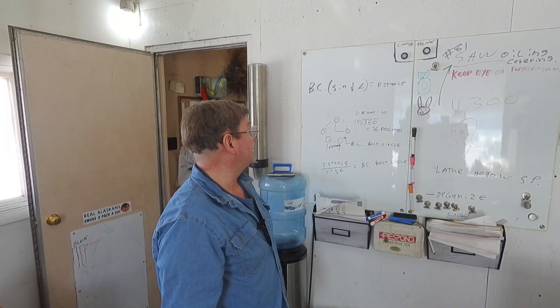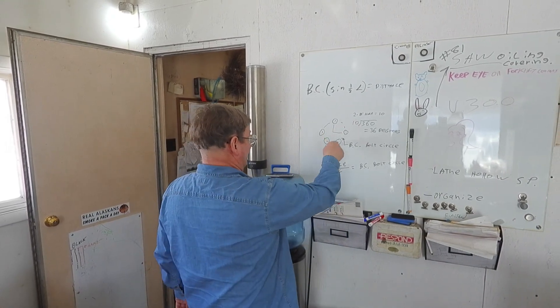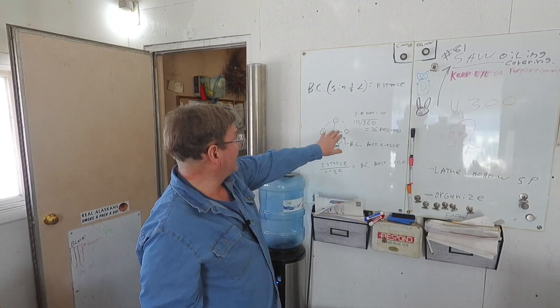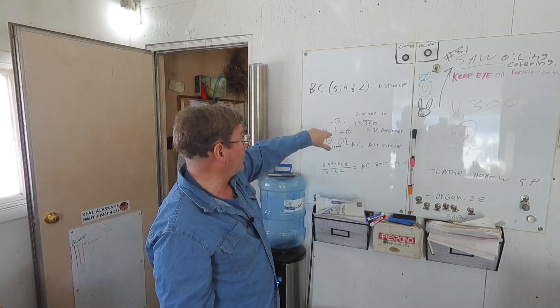We were looking at measuring bolt circles, bolt circle being the distance between holes crossed from each other. If we have, as in this example - and this is not strictly what you need to stick to - but this is five holes.